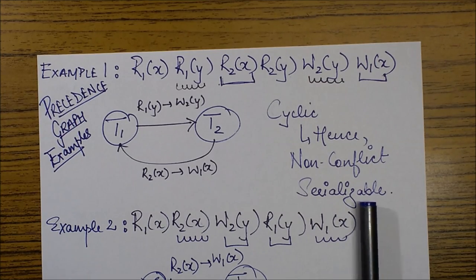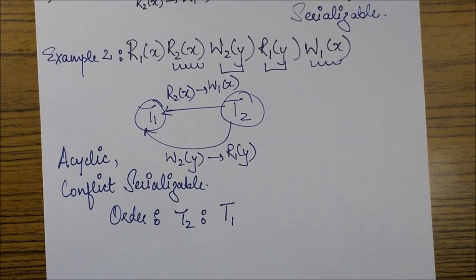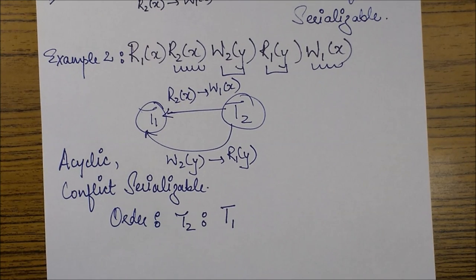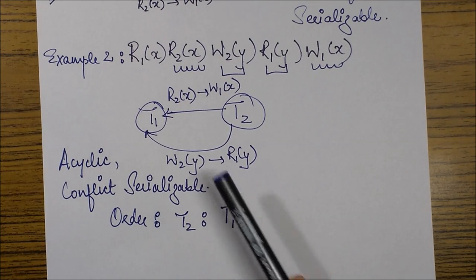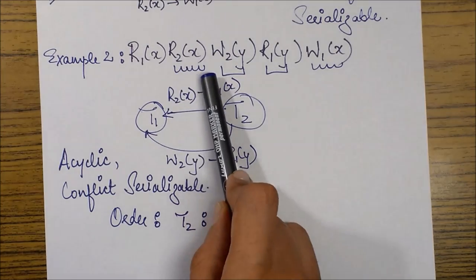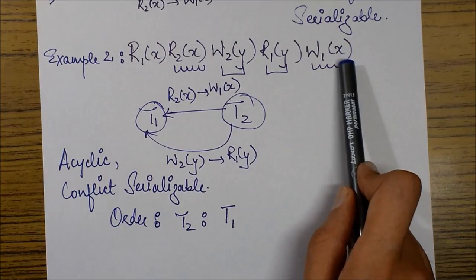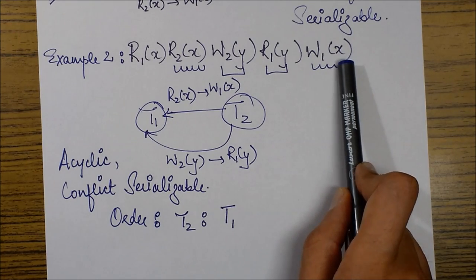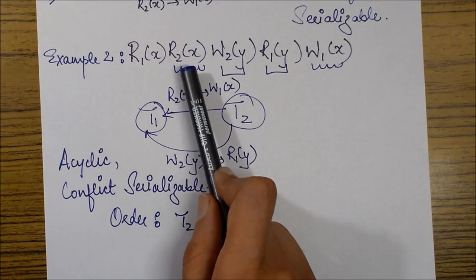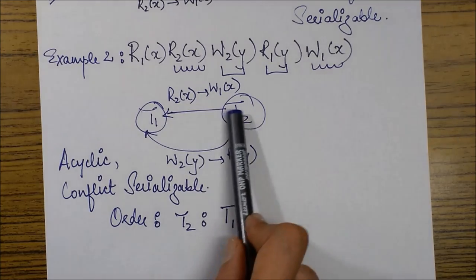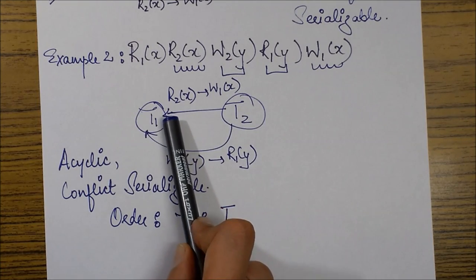Let's see the next example. In this example again we'll check for the conflict pairs first. So this R2X and W1X are being performed on the same data item X and they are the order from 2 to 1. So we have drawn a conflict edge corresponding to it.